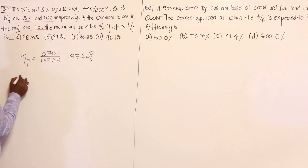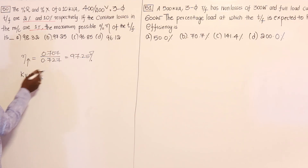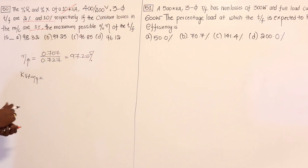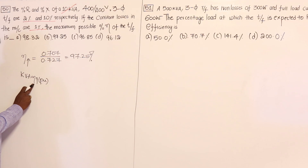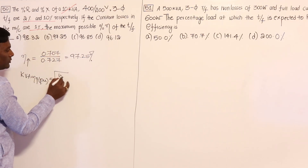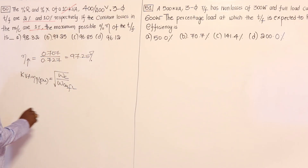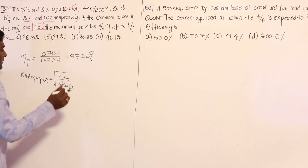The KVA at which maximum efficiency occurs — I will solve in per unit, so the 10 KVA rating is not strictly required. KVA at max efficiency in per unit equals KVA at max efficiency divided by KVA rated, which equals the square root of core loss divided by full load copper loss. Core loss is given as one percent.